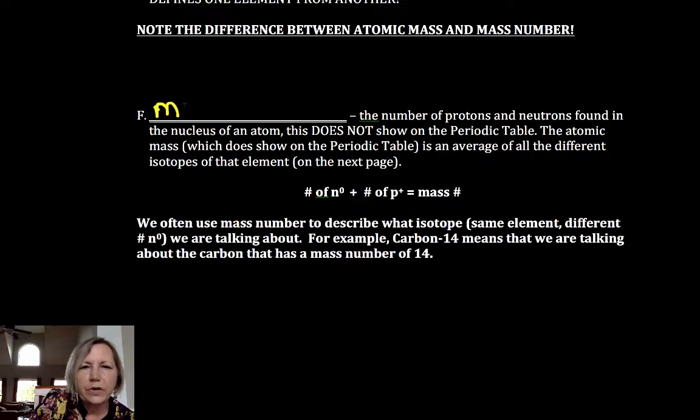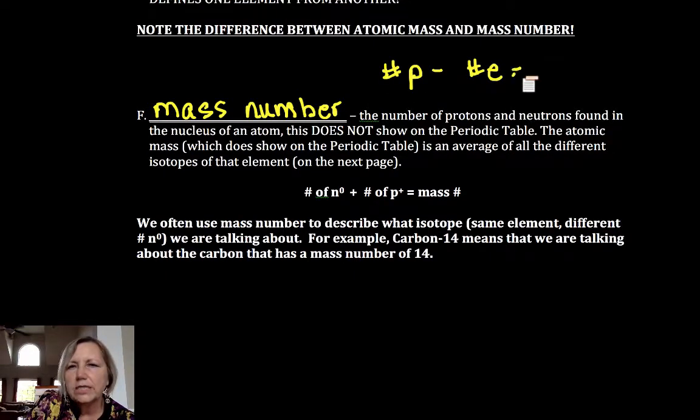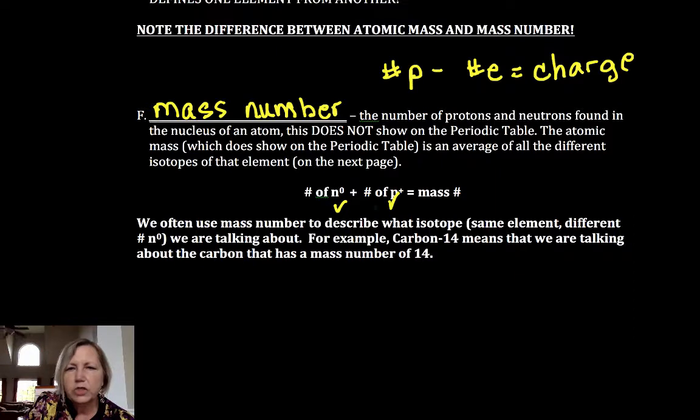Mass number is the protons plus the neutrons. Remember number of protons minus number of electrons is equal to the charge, and the number of protons plus neutrons is the mass number.